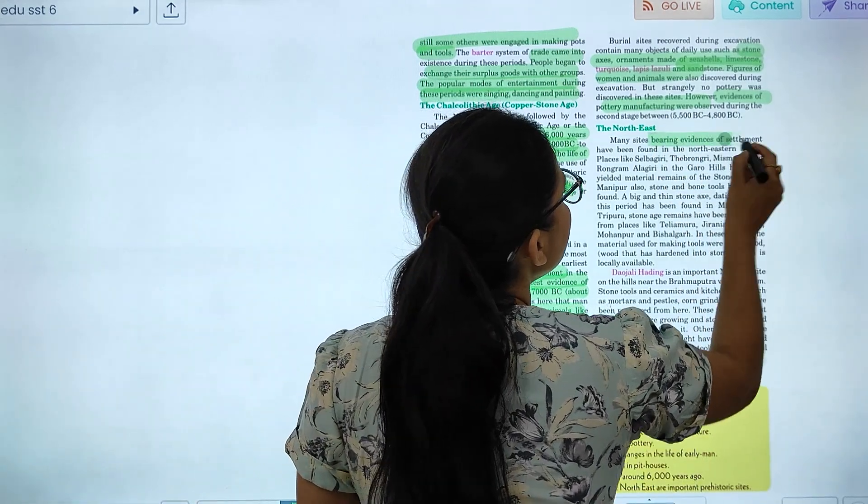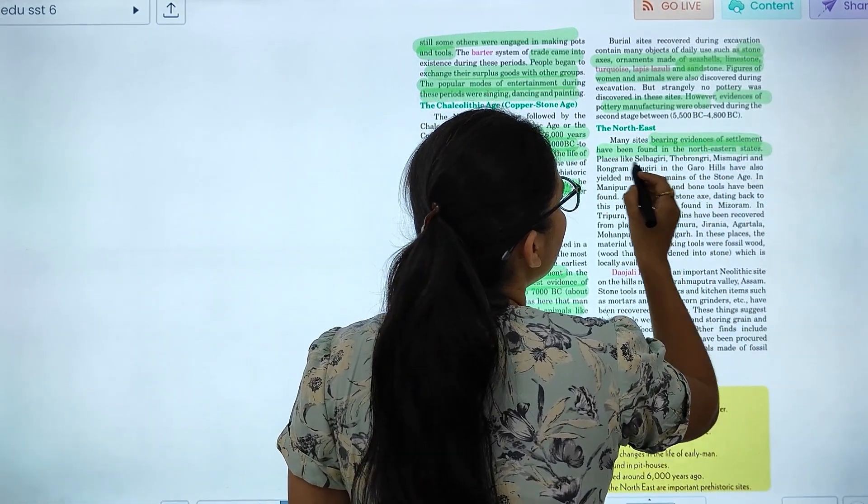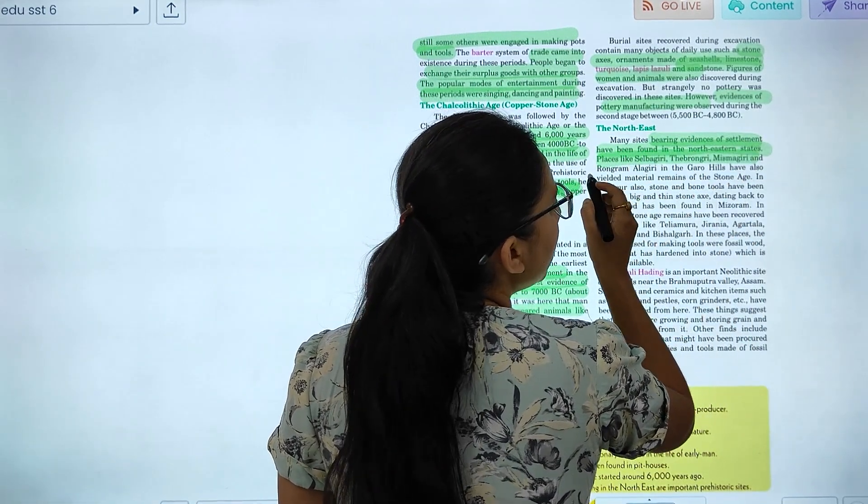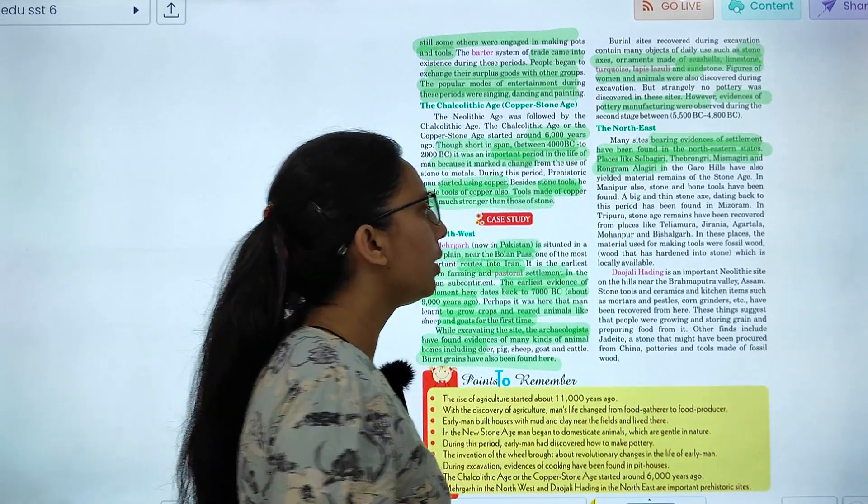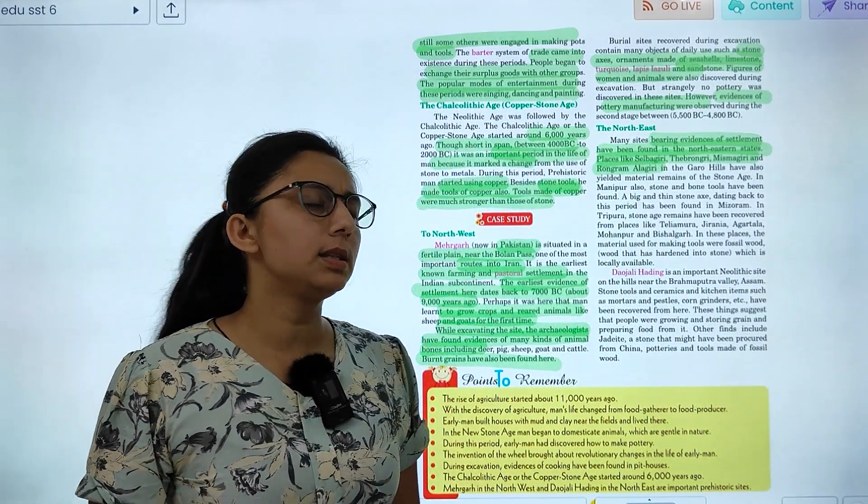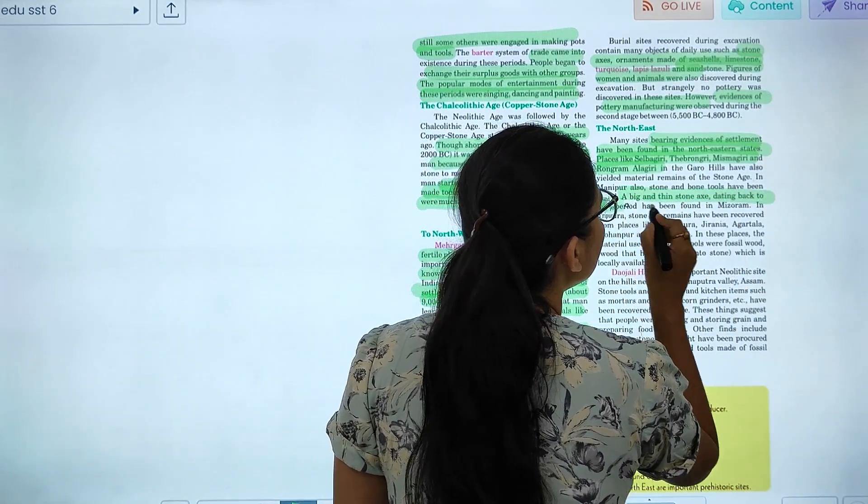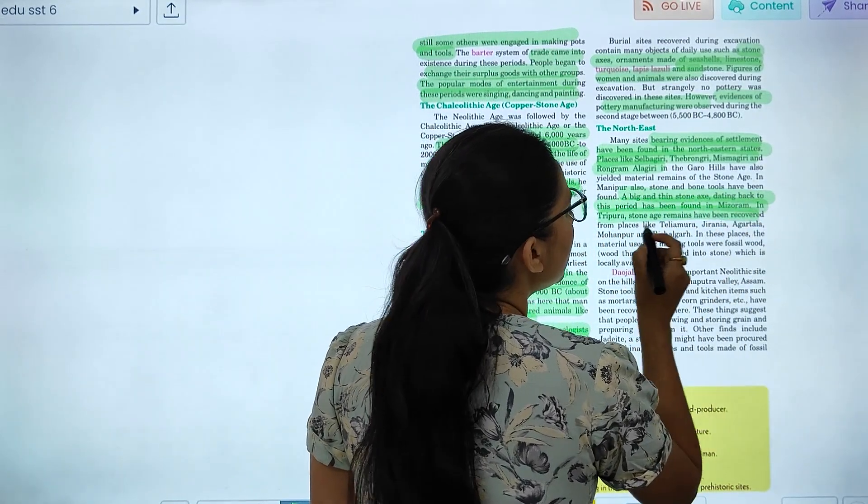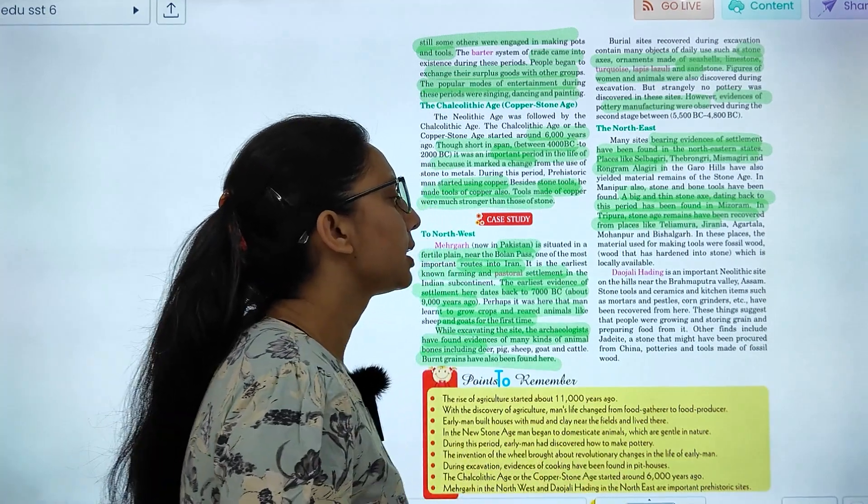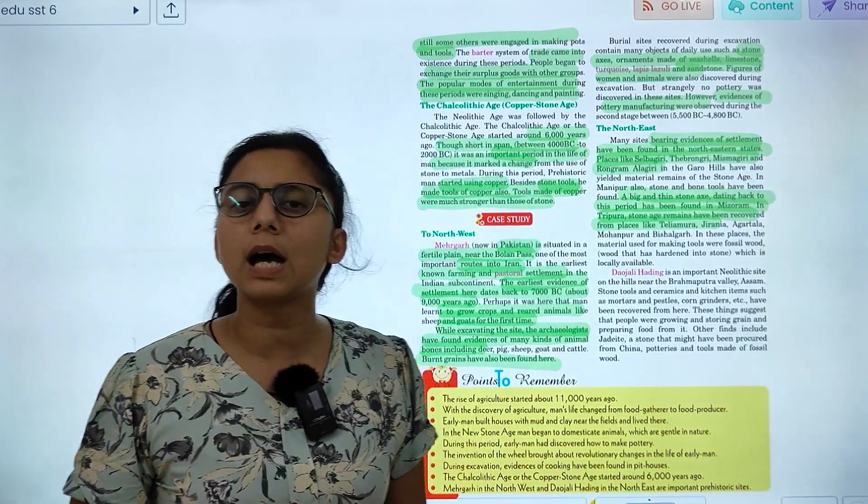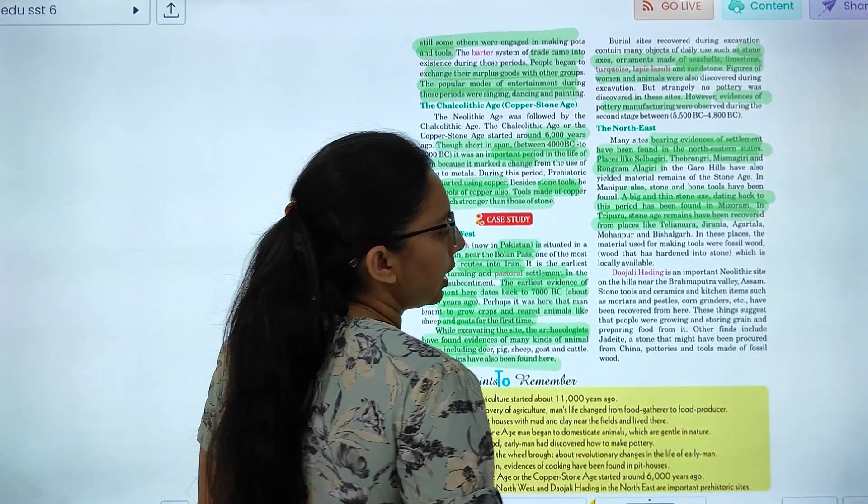We are talking about the Northeast. Many sites bearing evidence of settlements have been found. Like Selvadhi, Dhyorwan, Maghri, Roldan, Adhigiri, Garo Hills, these are all you can see. Stone age remains dated back to prehistoric times were also found. Tripura's stone age remains have been recovered from Sadar Patala, Mohanpur, Visalgarh, these are all you can see.